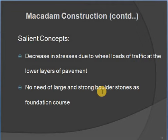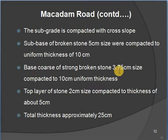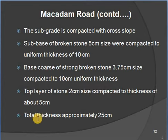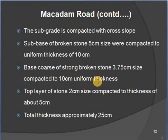The subgrade is compacted; sub-base of broken stone 5 cm size compacted to 10 cm thickness; base course of broken stone 3.75 cm size compacted to 10 cm thickness; and top layer of stone 2 cm size compacted to 5 cm thickness. Total thickness is approximately 25 cm. So the layers are: sub-base, base course, and top layer.